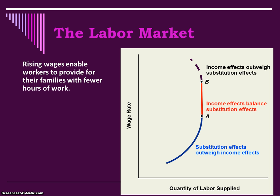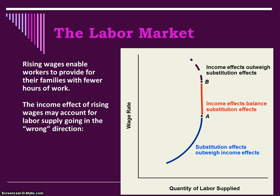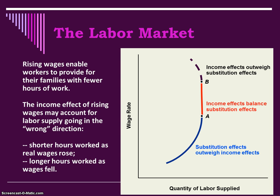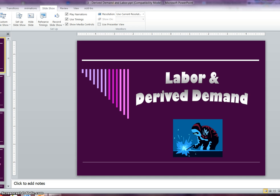Rising wages enable workers to provide for their families with fewer hours of work. The income effect of rising wages may account for labor supply going in the quote-unquote wrong direction, as we just explained — shorter hours worked as real wages rose, and longer hours worked as wages fell. The less money you make, the more hours you put in; the more money you make, typically the fewer hours you are willing and able to put in. And that's it — that's all she wrote.